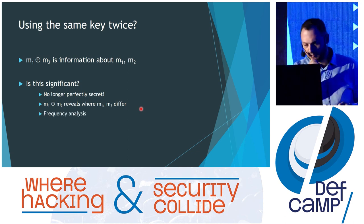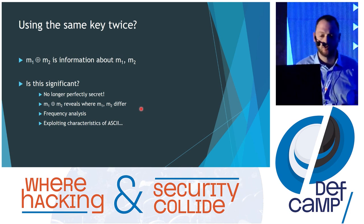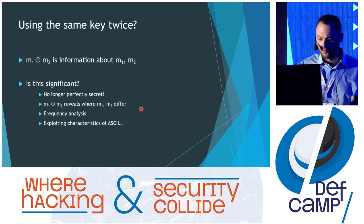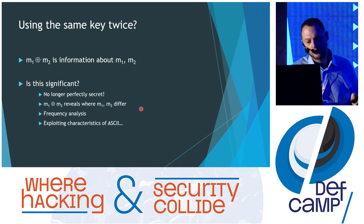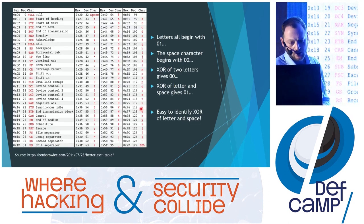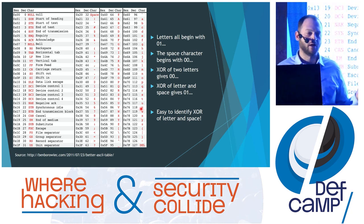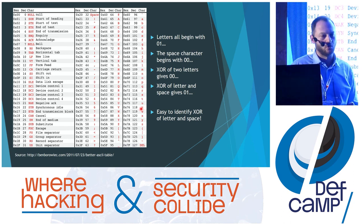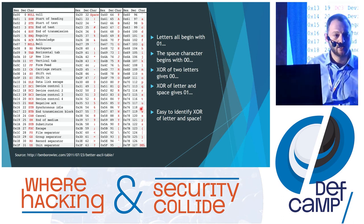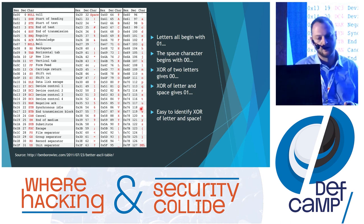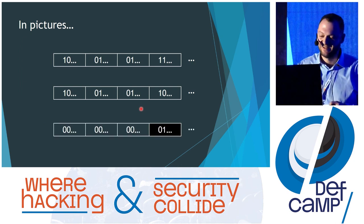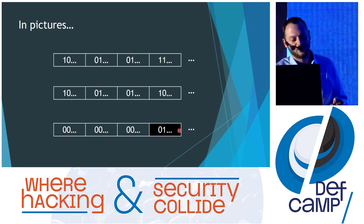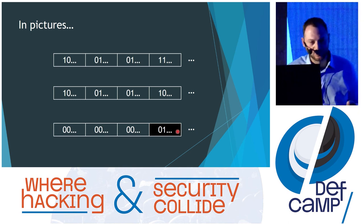When we XOR M1 and M2, we can see where the bits of the messages differ: if they differ we get one, if they are the same we get zero. We can analyze the frequency and also exploit the characteristics of ASCII. In the ASCII table, every letter in binary begins with zero-one, and every space begins with zero-zero. So if we XOR two letters we get zero-zero, but when we XOR a letter with a space we get zero-one — making it very easy to identify when a letter is XORed with a space. Here is a small example.